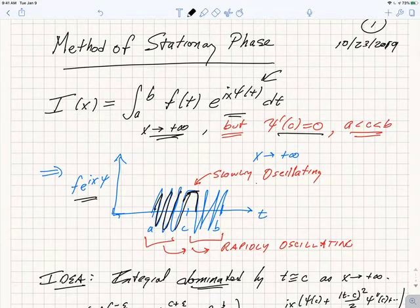And so we would expect, inspired by our understanding of the Riemann-Lebesgue lemma, that the pieces where the integral is oscillating wildly are going to actually cancel out. Instead, the dominant contribution is going to come from the slowly oscillating piece, where the phase is stationary, where the derivative of the phase is close to zero.